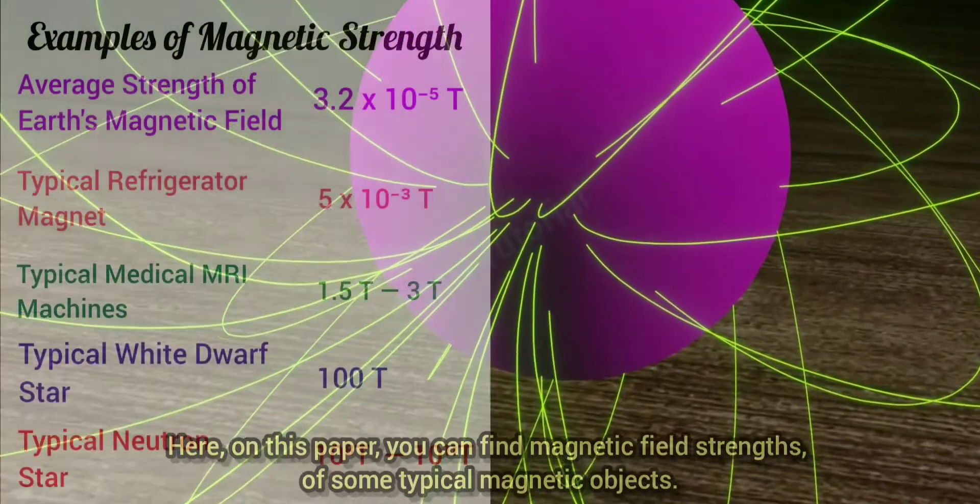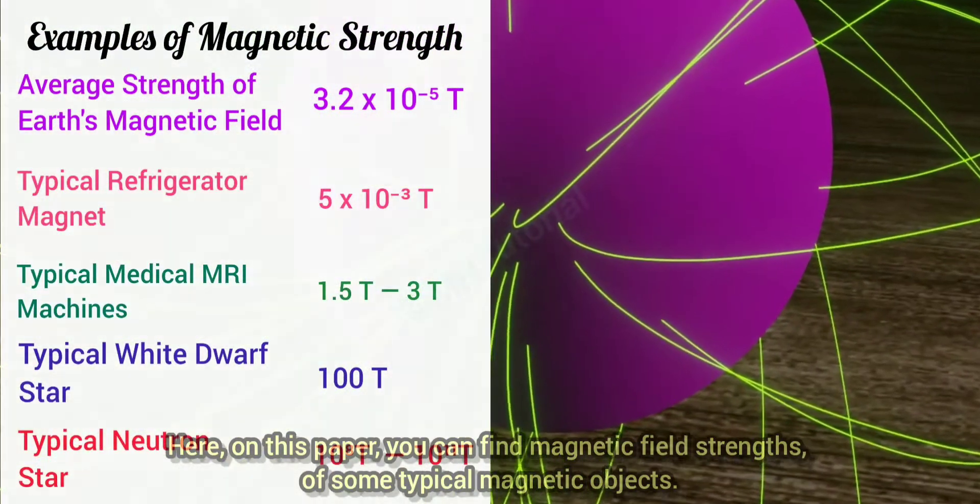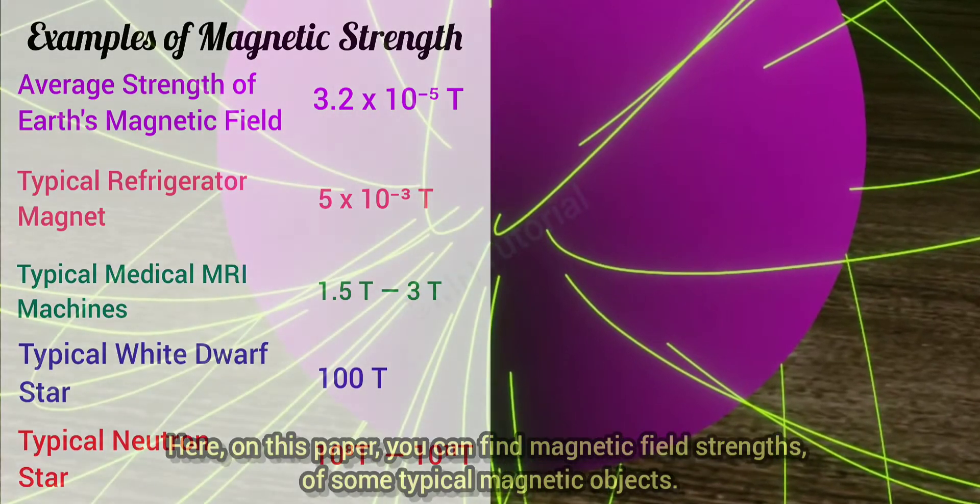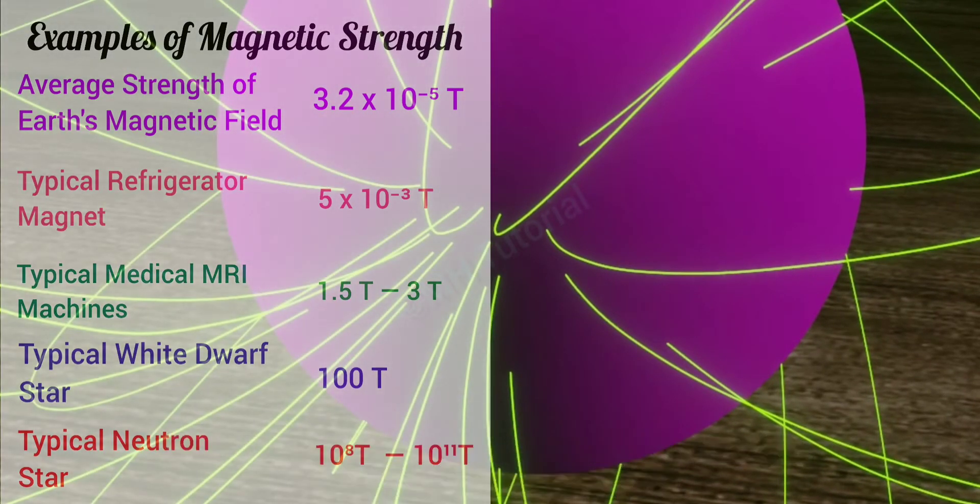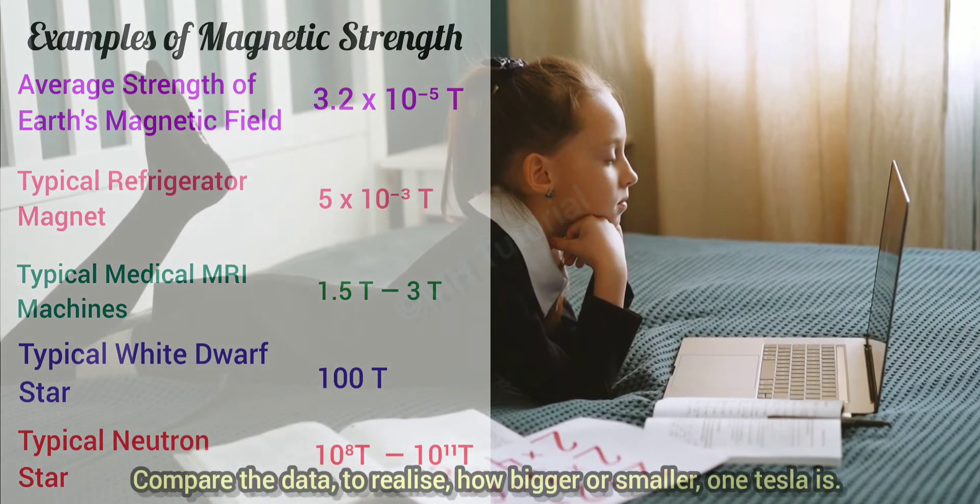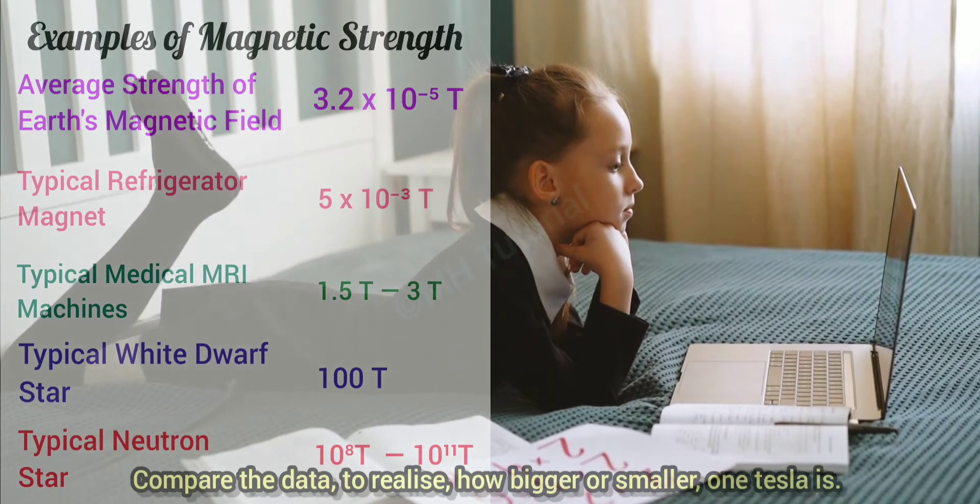Here on this paper, you can find magnetic field strengths of some typical magnetic objects. Compare the data to realize how bigger or smaller one Tesla is.